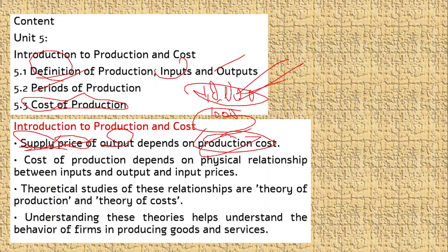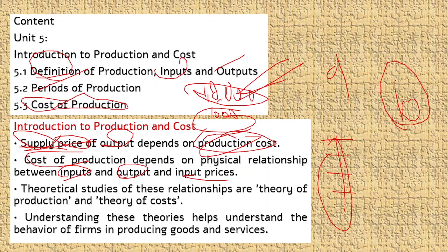The cost of production depends on the physical range between input and output. If this input is intended to make a value, the result in each of our taxes will depend on the cost of production. If the input price depends on the cost of production, we will get the input price. The study of this relationship covers the theory of production and theory of cost.